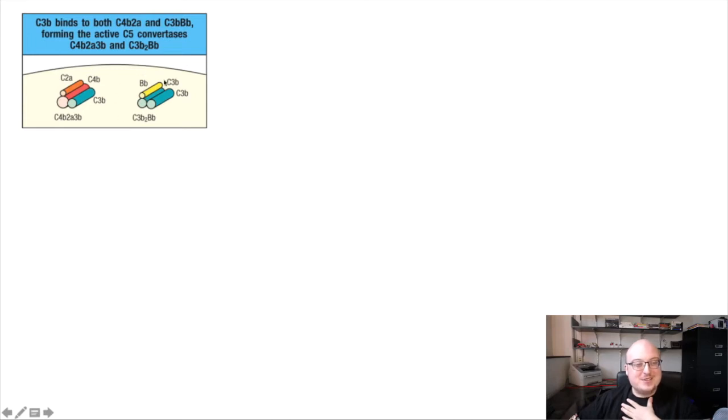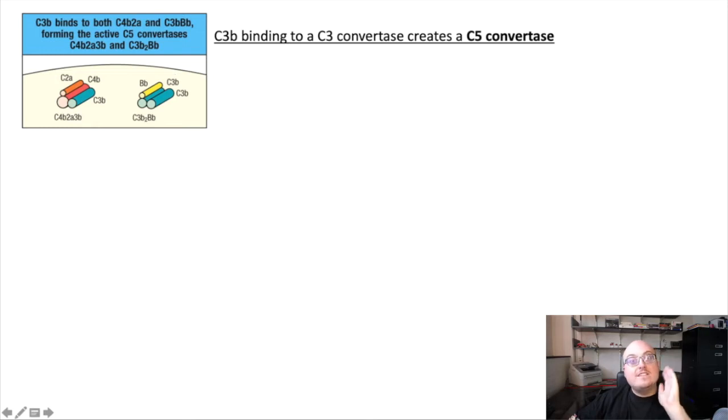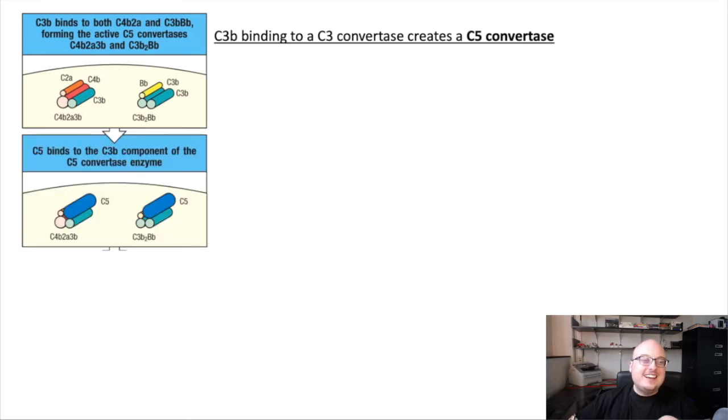I'm struggling a little bit here, I'm sure you are too. But the important thing is that when C3B binds to the C3 convertase, it forms an enzyme called a C5 convertase. And you should by now be able to predict what a C5 convertase is going to do. The C5 convertase is going to bind to C5 and proteolytically cleave it.